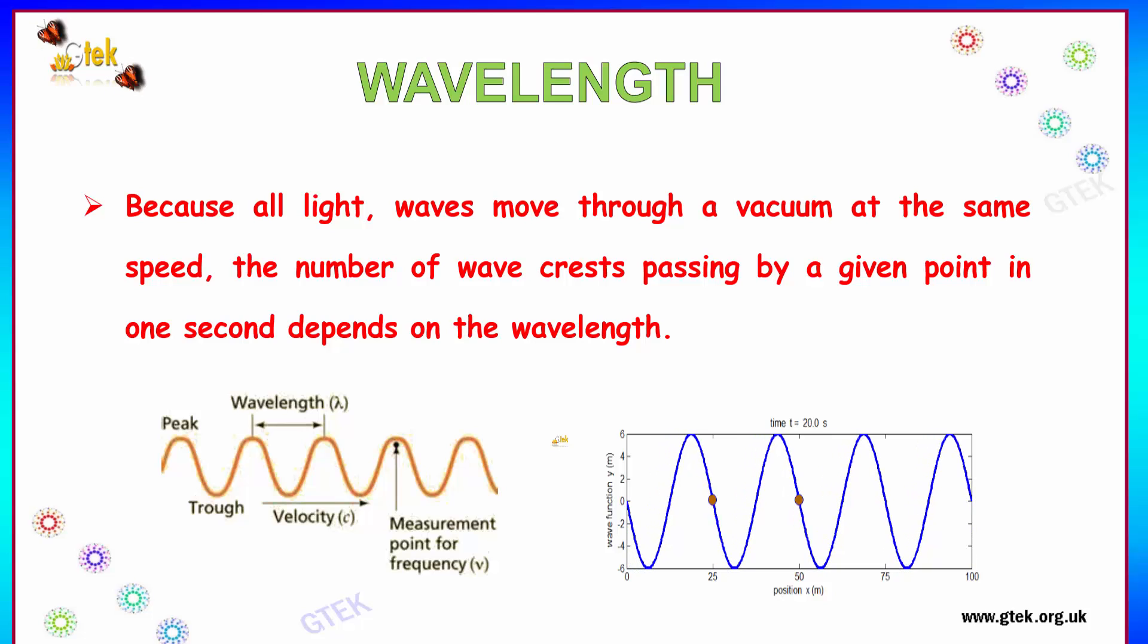You can see on the x-axis we have the position, and on the y-axis we have the wave function that is stated as ym. Over here you can find the number of wave crests passing by a given point in one second. This is the specification of how the wavelength will be calculated in terms of velocity on the x-axis, and this is the measurement point for the frequency v.